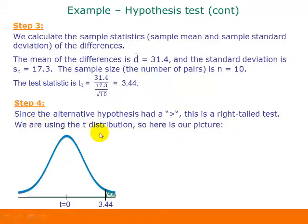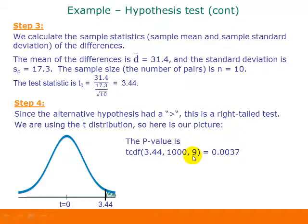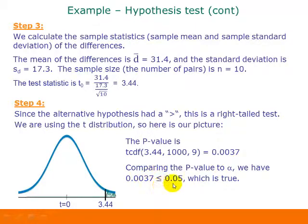Step 4: Since the alternative hypothesis has a greater-than sign, this is a right-tailed test. Using the T distribution, we shade from our test statistic of 3.44 to the right. The p-value is the area of that shaded region, calculated using TCDF from 3.44 to 1000 with 9 degrees of freedom (n minus 1). The p-value is 0.0037. Since 0.0037 is less than or equal to 0.05, we have positive conclusions.